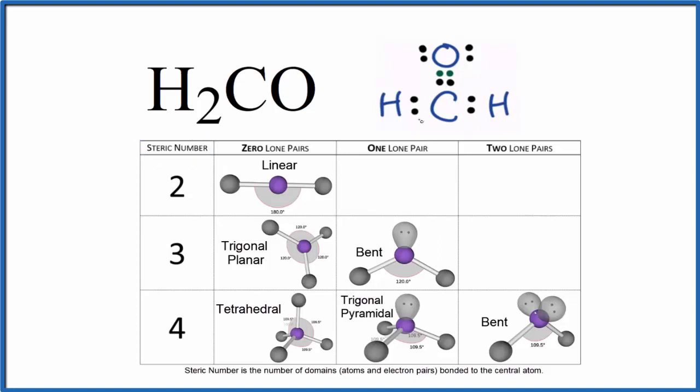That's the number of things attached to the central carbon. So here's our central carbon. We have two hydrogen atoms there and then we have this double bonded oxygen. So we have three things attached and we don't have any lone pairs on the carbon.